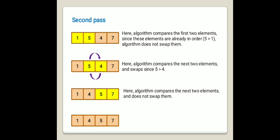In the second pass, the result of the first pass — 1, 5, 4, and 7 — is compared again. The first pair, 1 and 5, are not swapped since 5 is greater than 1. The second pair, 5 and 4, are swapped since 5 is greater than 4. The third pair, 5 and 7, are not swapped since they are already in order. After the second pass, we get the sequence 1, 4, 5, and 7.